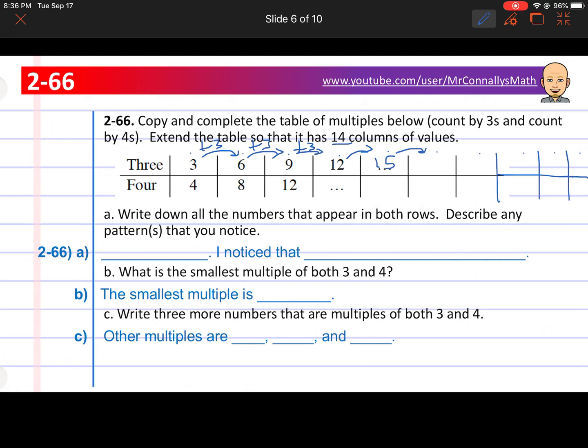Then we'll add 3 again and get 18. And you're going to keep doing that. And then on the bottom, we'll do 4, add 4, add 4 again, add another 4 that's 16. Another 4 would be 20 and 24. And the rest you'll do until you've gone 14 columns over.